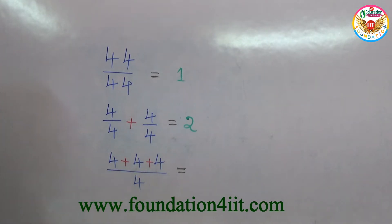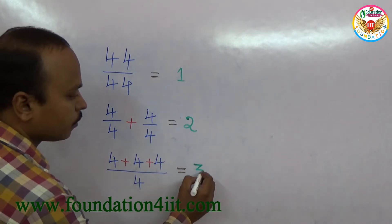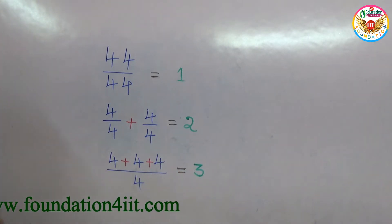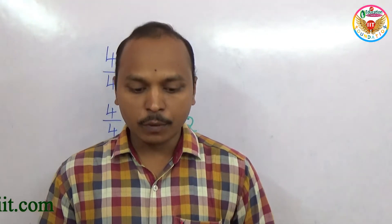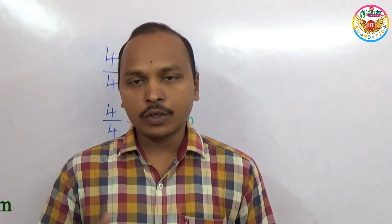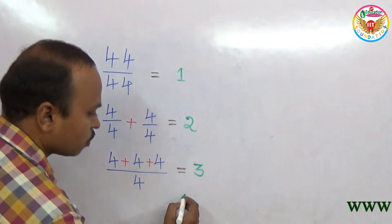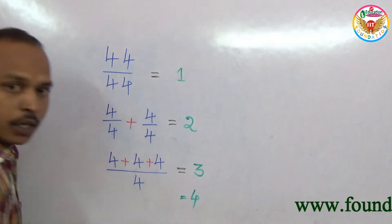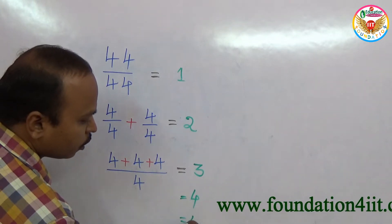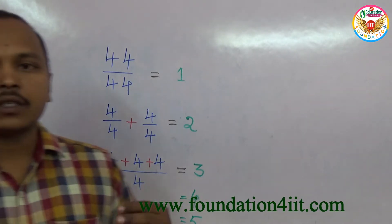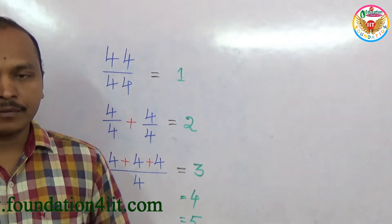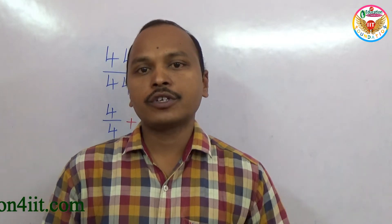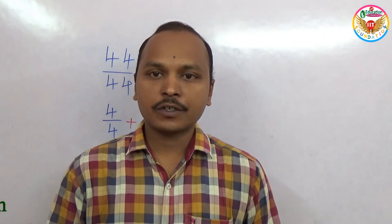To get three: 4 plus 4 plus 4, which is 12, divided by 4 equals 3. Now the question is — can you make all single digits using four fours with any mathematical operation? Not only 1, 2, 3 but also 4, 5, 6, 7 all the way to 9. You can pause the video and try, or continue for the solution.